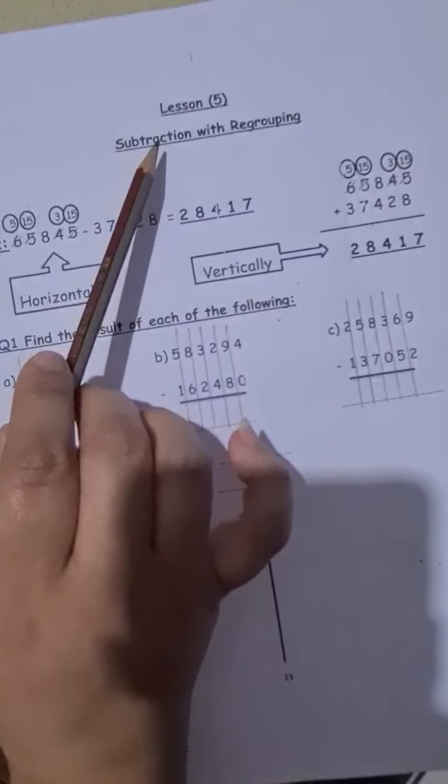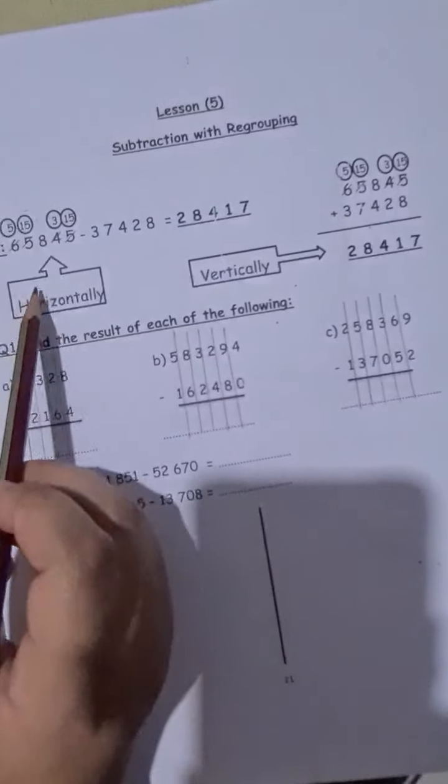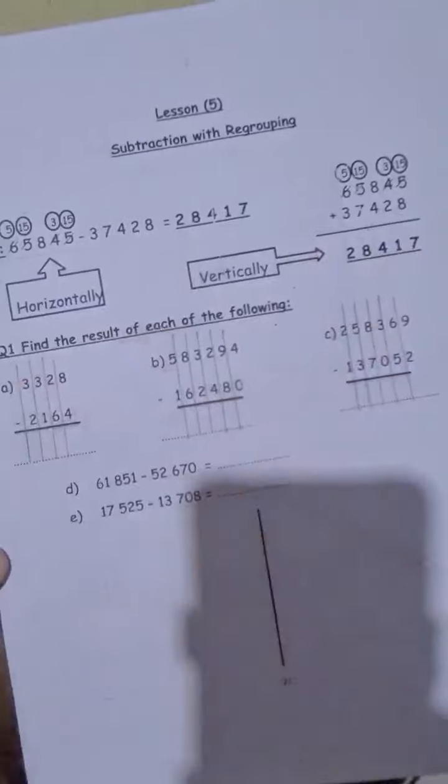It's the normal way that we do subtraction. We are on page 21. Here, I can do it horizontally like this, or vertically above each other.